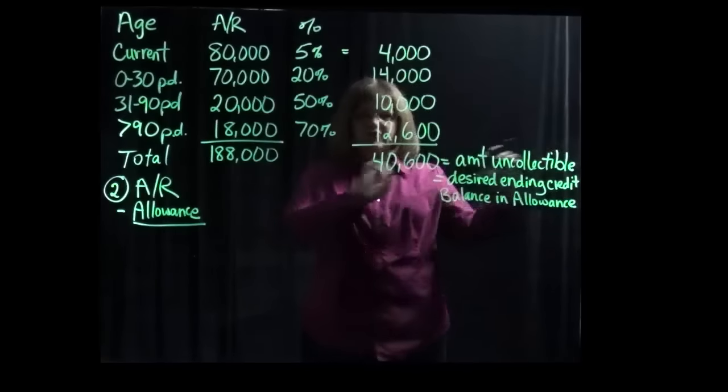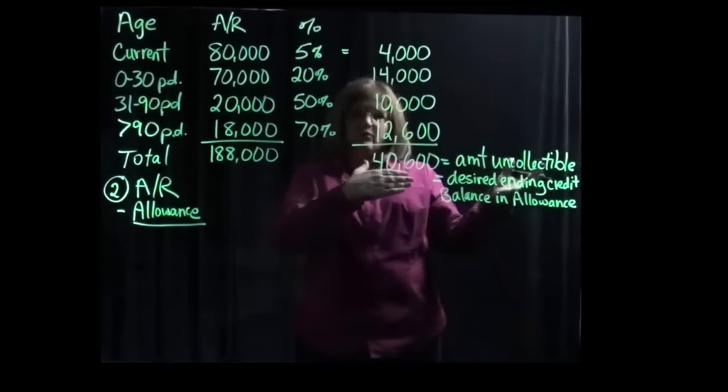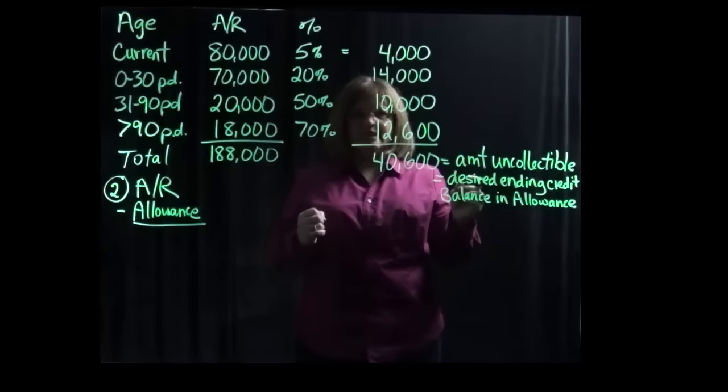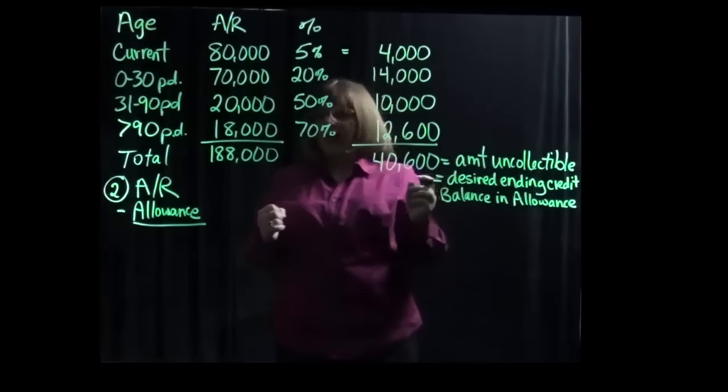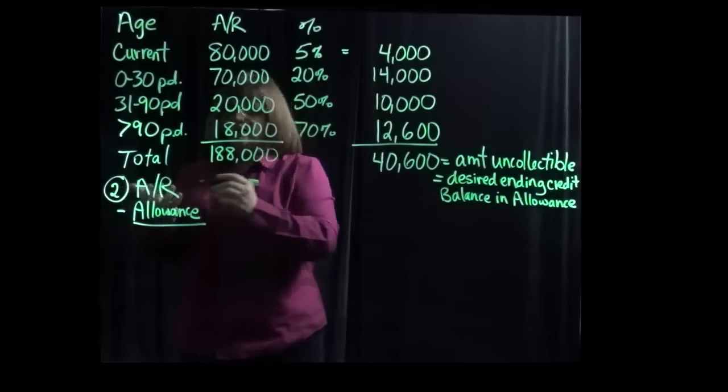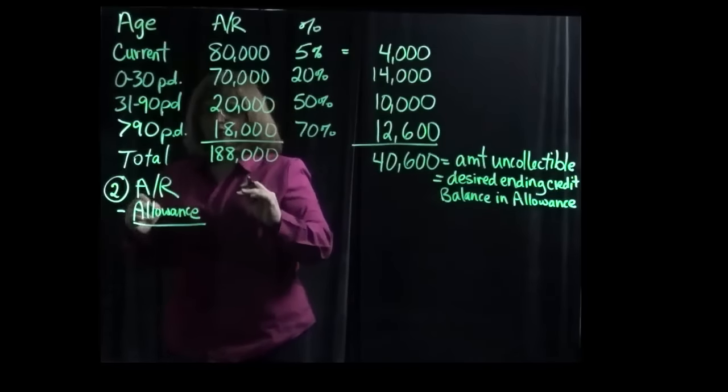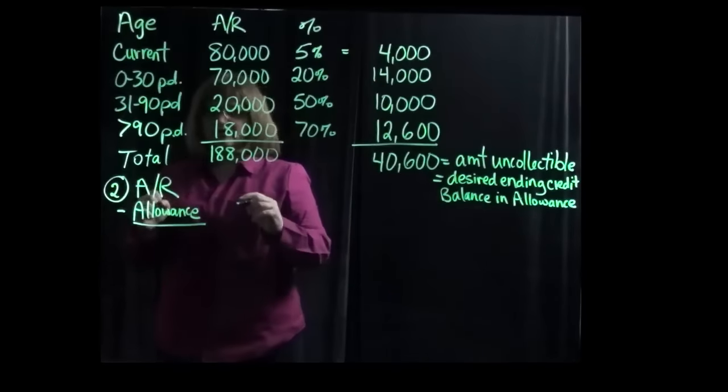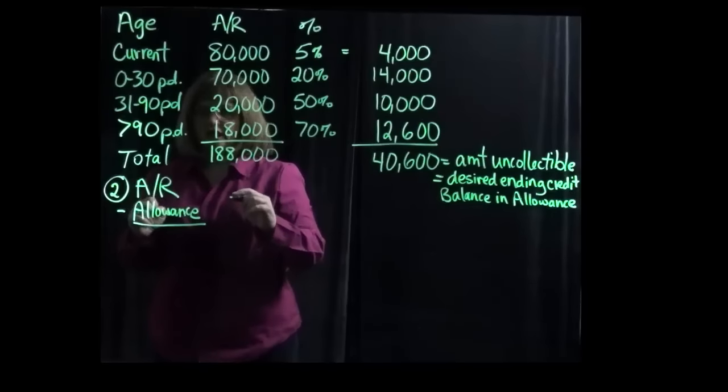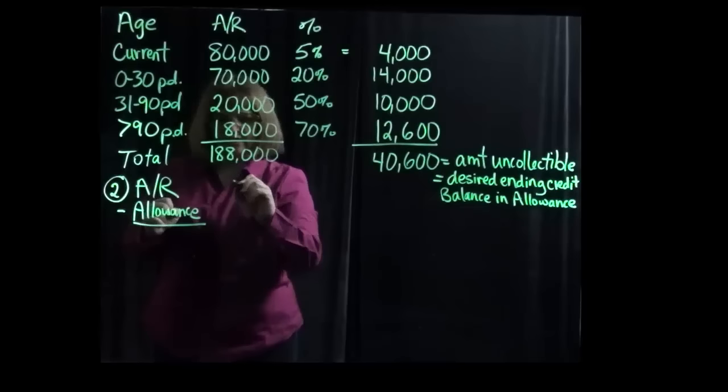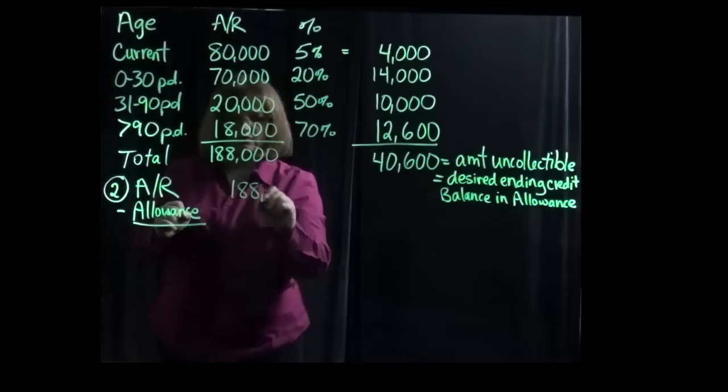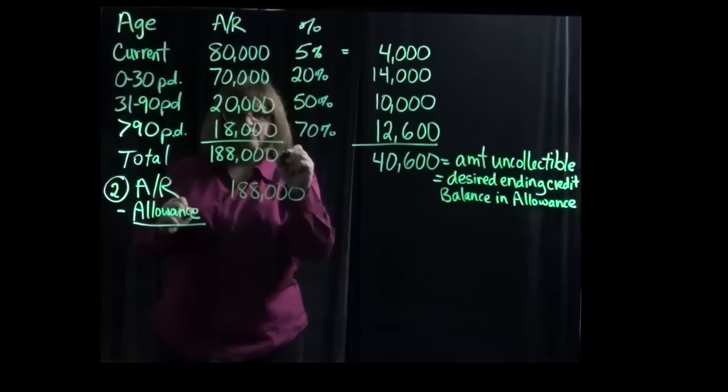So the amount that we don't expect to be able to collect, that's what we want our allowance to end up being. So that means that on our balance sheet, we want to show our gross accounts receivable, the amount that's actually in the accounts receivable account on our general ledger, which in this case is $188,000. That came from right there.